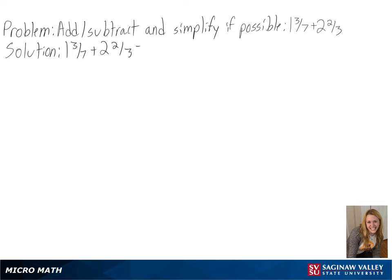The first part of our solution is to convert our mixed numbers into fractions, so we can get a common denominator. Converting these, we get 10 over 7 plus 8 over 3.